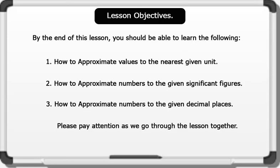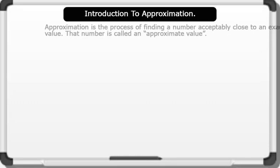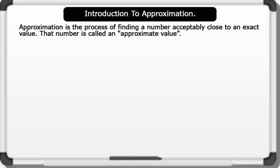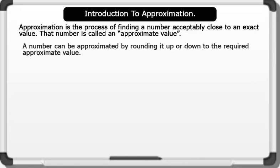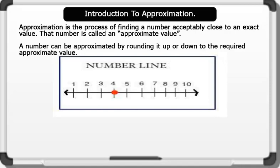Let's now see what approximation is. Introduction to Approximation. Approximation is the process of finding a number acceptably close to an exact value. That number is called an approximate value. It has not always been possible to give the exact value of some quantities. Therefore, we find it more convenient to give approximate values. A number can be approximated by rounding it up or down to the required approximate value. The diagram on the board shows how to round numbers up or down using the number line.